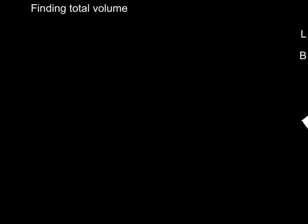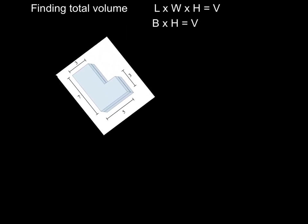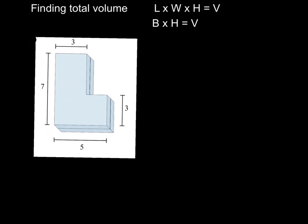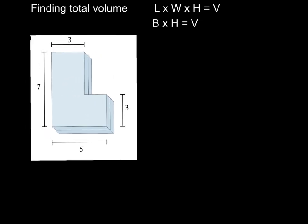Now as you know, to find volume of a rectangular prism, we multiply length times width times height, or we multiply base times height. Now we're going to take a look at a shape that is not a rectangular prism, but is actually two rectangular prisms.